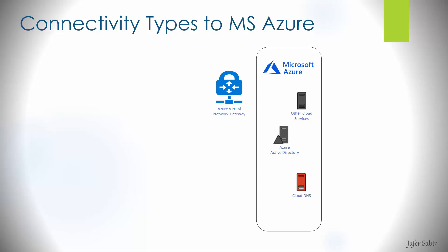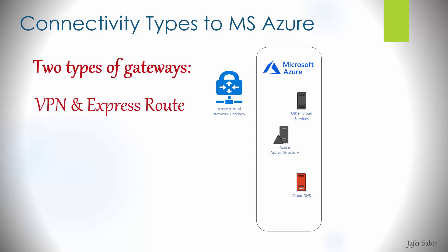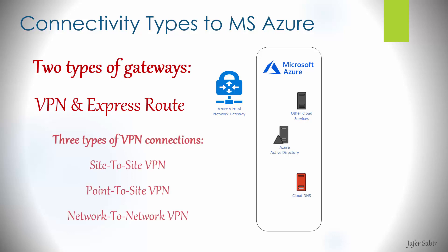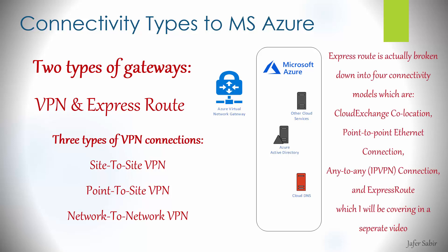The Azure virtual network gateway is our method of access into the cloud environment. It provides two types of gateways: one is called VPN, which is a virtual private network over the internet, and the other is called an ExpressRoute connection, which is a dedicated private connection. The VPN gateway is used to set up three types of secure encrypted connections: site-to-site VPN, point-to-site VPN, and network-to-network. The ExpressRoute connection provides just one type — a dedicated private connection.